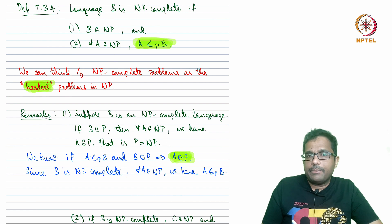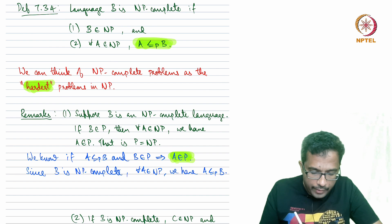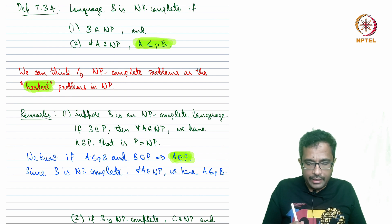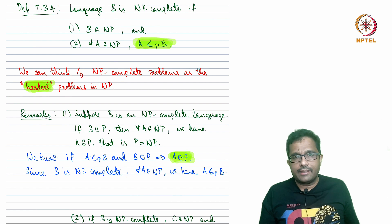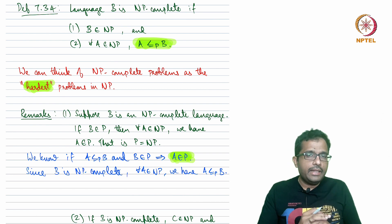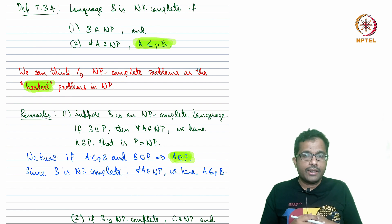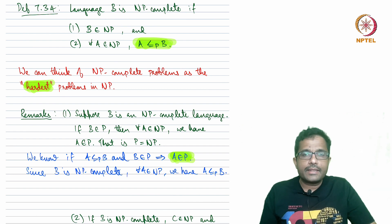If B is NP-complete and if we find a polynomial time decider for B, then we have a polynomial time decider for all languages in NP, meaning we have P equal to NP. You may recall the P versus NP question from a couple of lectures back. The question was: is P a proper subset of NP, or is P equal to NP? We know that P is contained in NP — so is P a proper subset or is it equal? Those are the two possibilities.